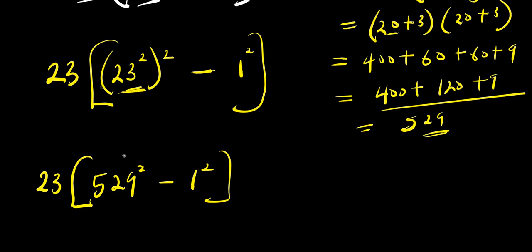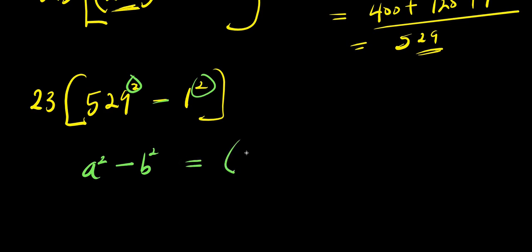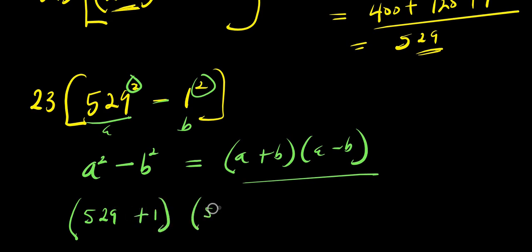Now because of the fact that we have power 2 here and power 2 here with a minus sign, I can make use of the difference of two squares identity: a squared minus b squared equals a plus b times a minus b. Here 529 is our a and 1 is our b. So we apply this to get 529 plus 1, times 529 minus 1.